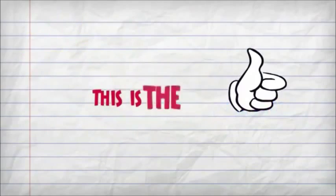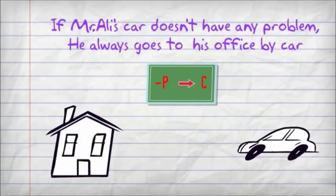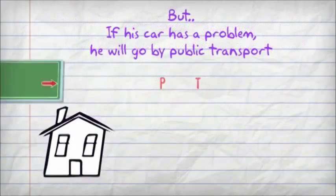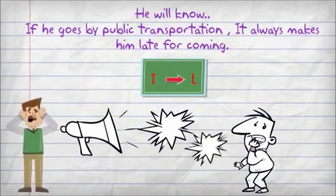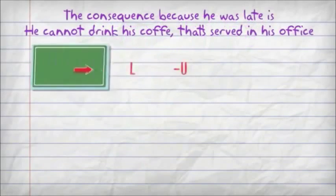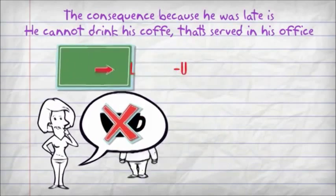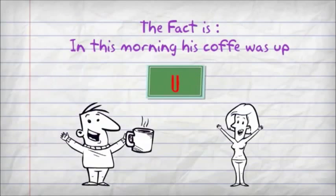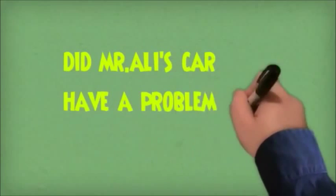Example of rules. We have an example of a problem. This is the story. Here is the question: Did Mr. Ali's car have a problem this morning?